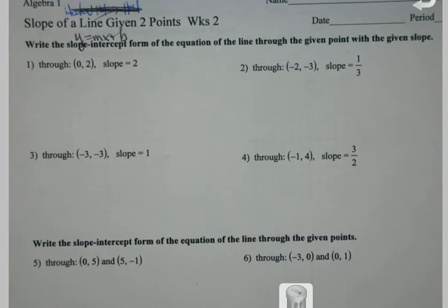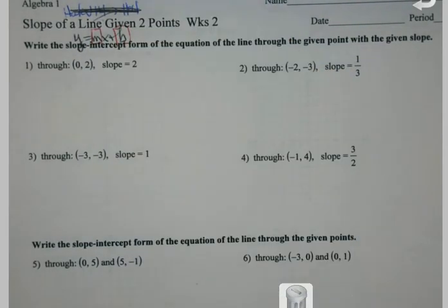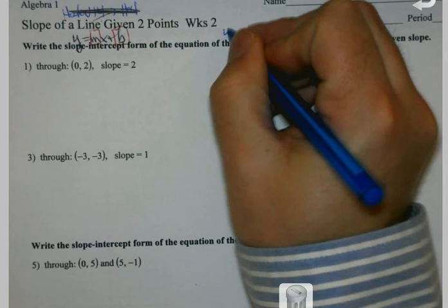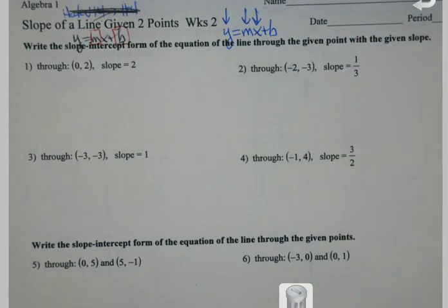Slope intercept form, whenever we say it, it's just y equals mx plus b. Our goal at the end is to be able to have these two values to plug in. Now, sometimes we may be given one of those, sometimes we may have to find both. But for this particular problem, what we're going to do is take that equation and plug those three values in. Once we do that, that's going to let us find b.